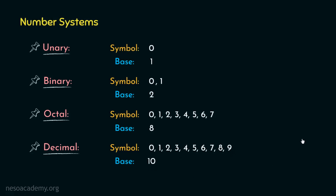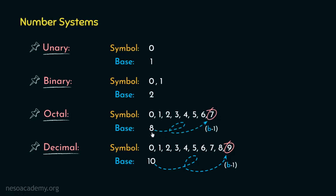Now observe the symbols having the greatest magnitude in all the number systems. In case of decimal, it's 9 — basically it's 1 less than the base value, that is 10. Then again, in case of octal, the symbol with the highest magnitude is 7, which is 1 less than the base value 8. Similarly, in binary, the symbol 1 is 1 less than the base value 2, and in case of unary, the symbol 0 is 1 less than the base value 1. So basically, in any number system with any base, the symbol with the greatest magnitude will be 1 less than the base of the number system.